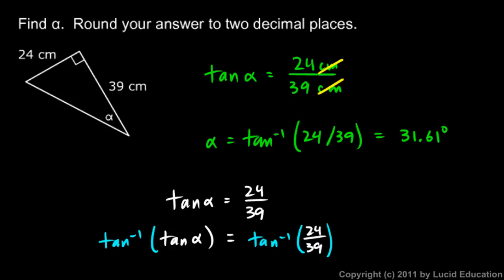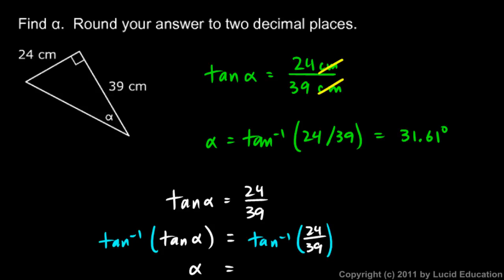The inverse tangent of the tangent of alpha simplifies to just alpha. So the left side is alpha, and the right side is the inverse tangent of 24 over 39 — giving the same answer. If you have trouble seeing that step, thinking of it as applying inverse tangent to each side uses what you already know from algebra.